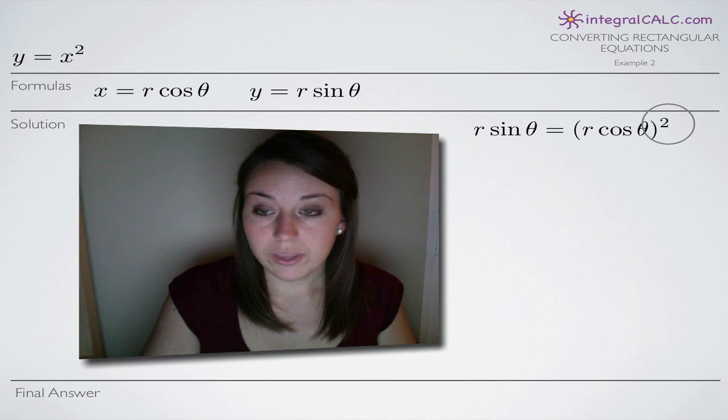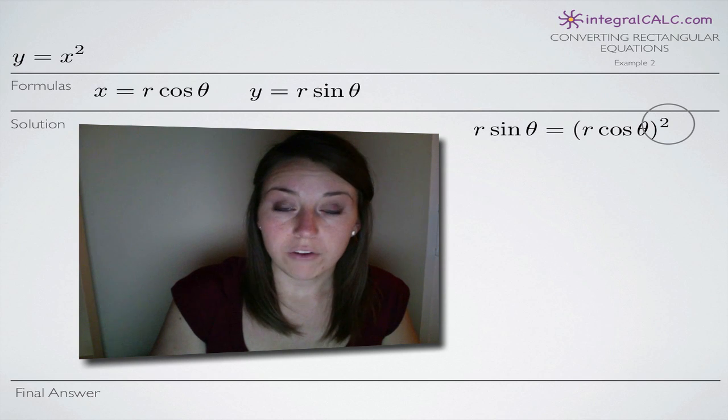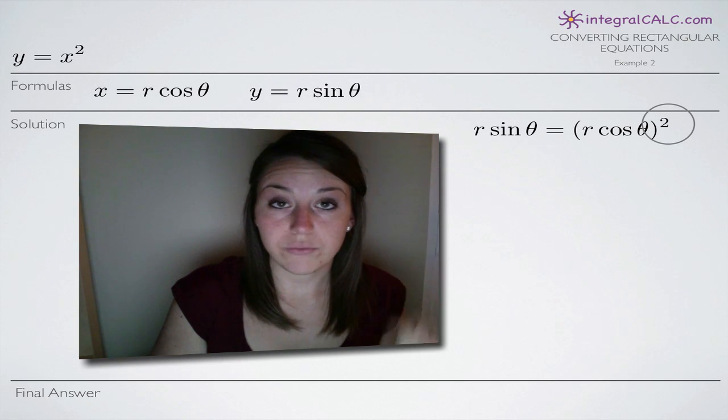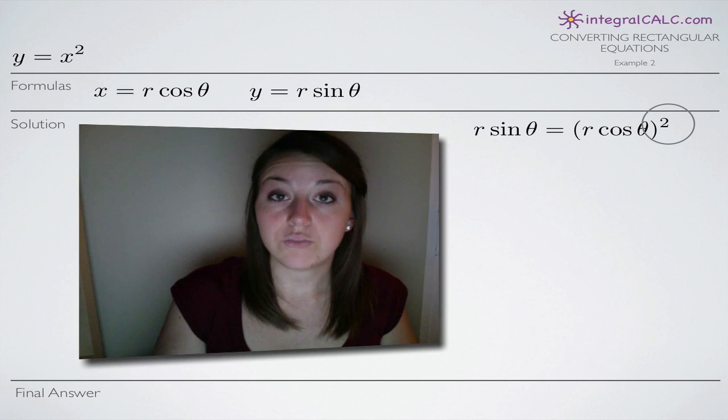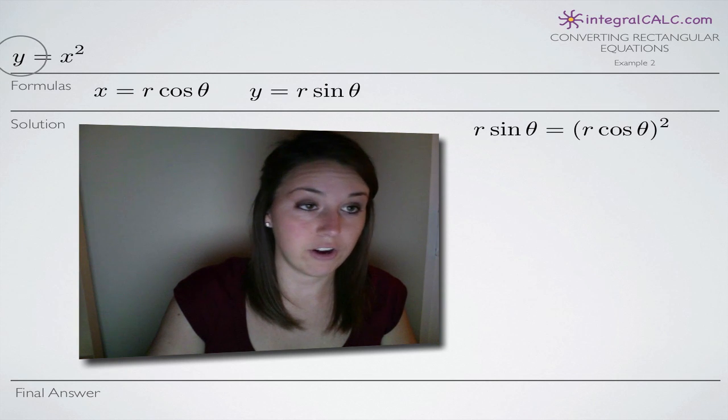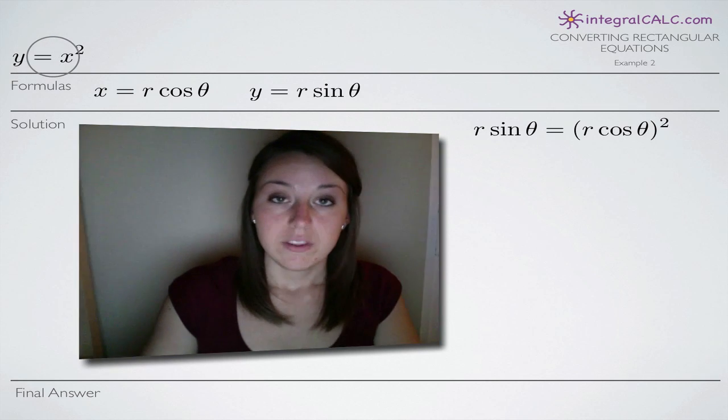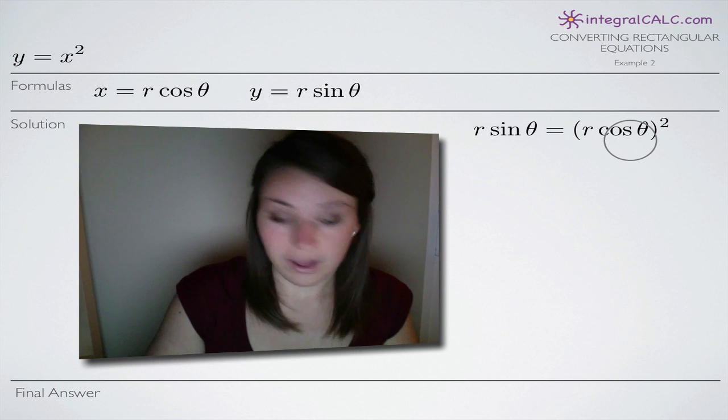What we want to do is simplify this equation and end up solving it for r. So we'll solve the equation for r in terms of theta just how a rectangular equation would normally be solved for y in terms of x. We'll have r equals some function in terms of theta.